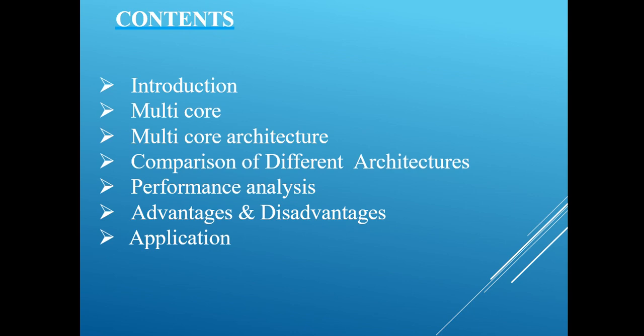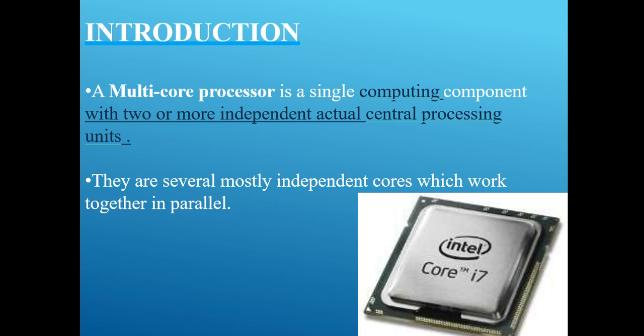So what is a multi-core processor? It's a single computer component with two or more independent actual central processing units, and also a computer processor on a single integrated circuit, which contains two or more separate processing units called cores.